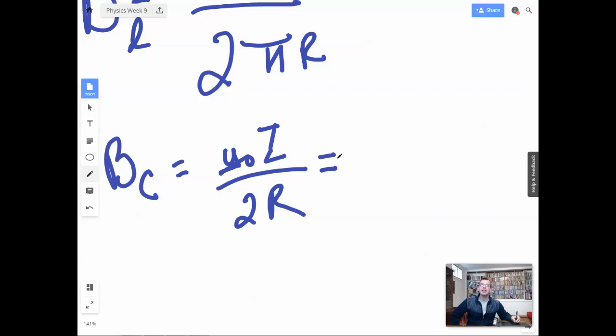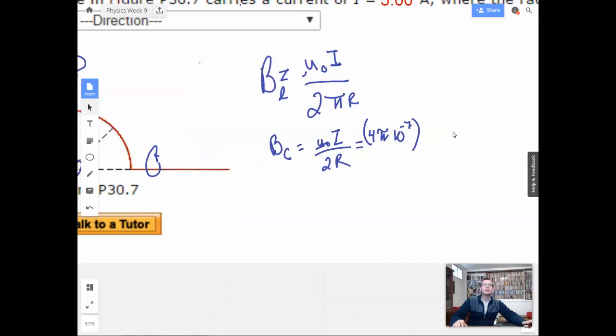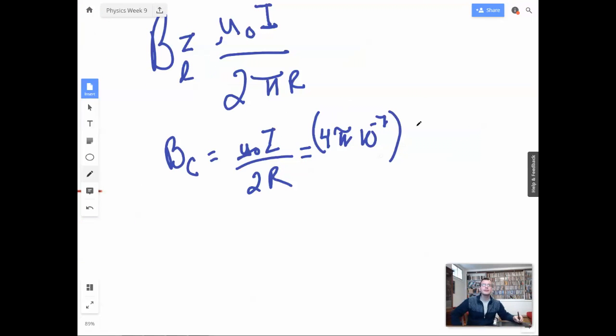So we're gonna have 4 pi times 10 to the negative 7th times, was it 5 amps? 5 amps. 5 over 2 times 3 times 10 to the negative 2nd.